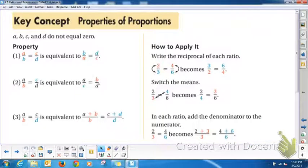So here's a key concept. It's a property of proportions. If a, b, c, and d do not equal 0, then you can write the reciprocal of each ratio, meaning you can flip them. You can switch them around. And in each ratio, add the denominator to the numerator. So take a minute and fill in your note template. And then we're going to do an example of each one.